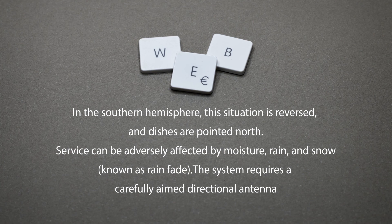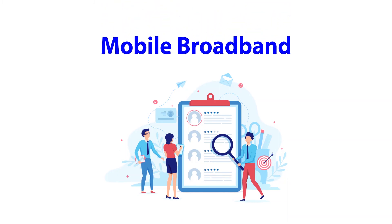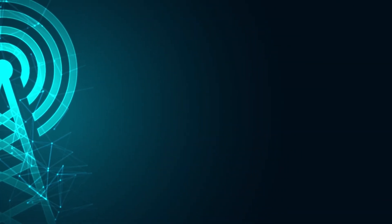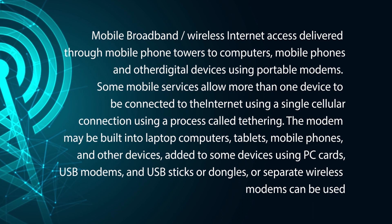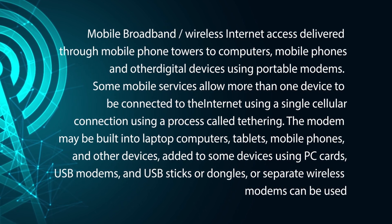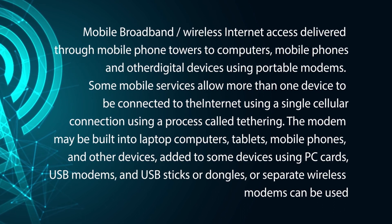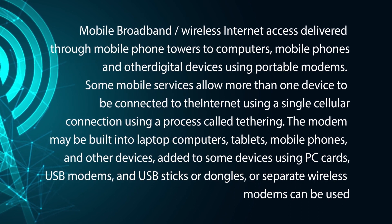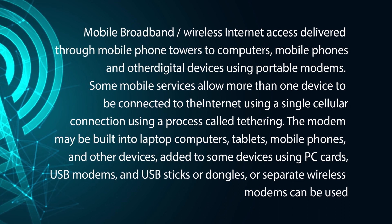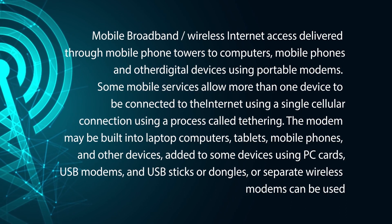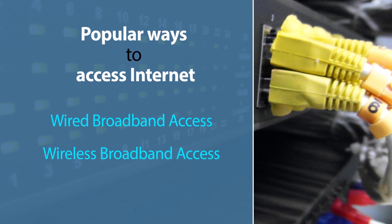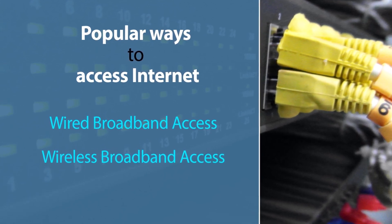Another wireless internet access method is mobile broadband, which most of us are already using. Mobile broadband delivers wireless internet access through mobile phone towers to computers, mobile phones, and other digital devices using portable modems. Some mobile services allow more than one device to be connected to the internet using a single cellular connection through a process called tethering. The modem may be built into laptops, tablets, and mobile phones, or added using PC cards, USB modems, USB sticks or dongles, or separate wireless modems.